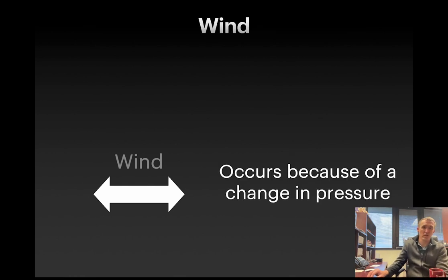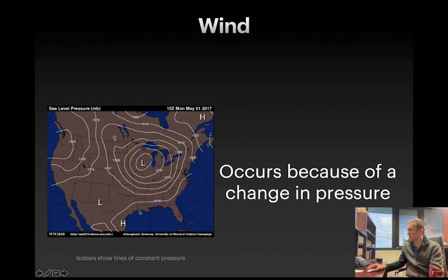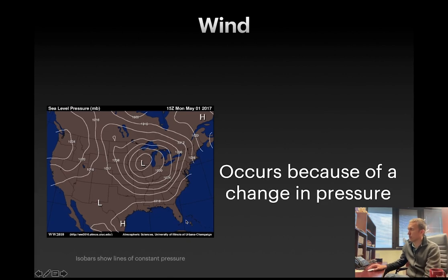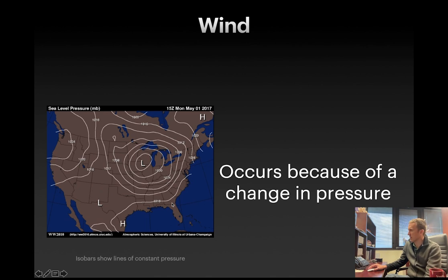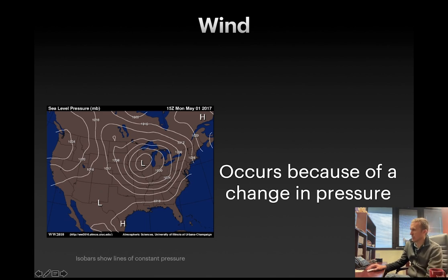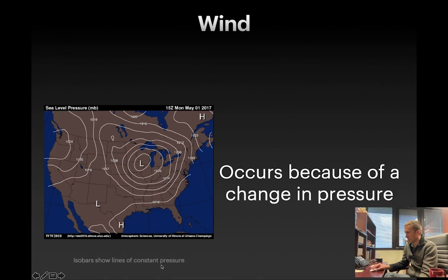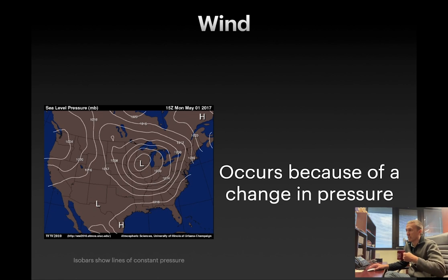Wind occurs because of changes in air pressure. Here we see different pressure systems. Standard atmospheric pressure at the surface is 1013.2 hectopascals. Here we have values like 1016, 1004, and 1000, so this is a low pressure system. These contours are called isobars, and they tell us lines of constant pressure. Isobars are telling us a lot about the kind of wind we can expect in these systems.